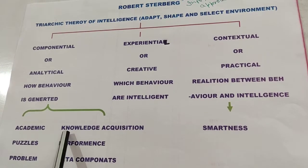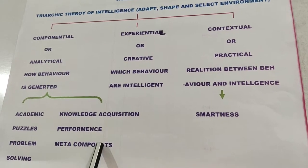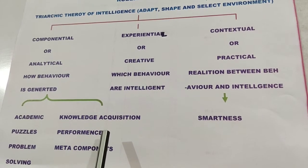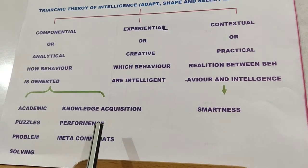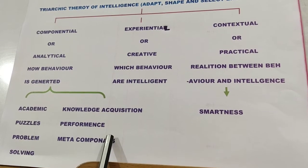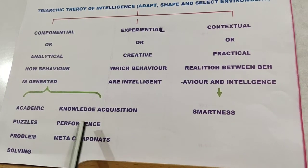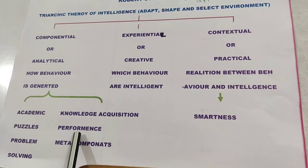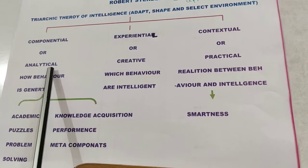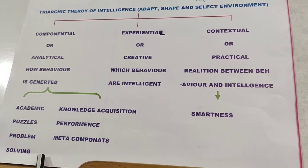We acquire knowledge related to the question or problem. The second sub-component is the meta-component, which means higher-level thinking — we think about how to solve the problem and what possible solutions exist. The third is performance — when we take action and apply our chosen solution to the problem. People with strong analytical intelligence are generally considered academically intelligent and good at problem solving.